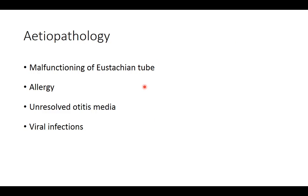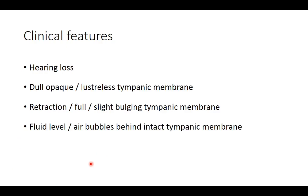The etiopathology of serous otitis media is similar to ASOM — Eustachian tube malfunction, allergy, unresolved otitis media, and viral infections are predisposing factors. Clinical features include hearing loss, and on examination the tympanic membrane is dull, opaque, and lacks its normal light reflex. The TM position can range from mild to severe retraction or may appear full or slightly bulging. Congestion is minimal and only seen in early stages. Pain is also negligible and short-lasting, appearing only in the initial stages.